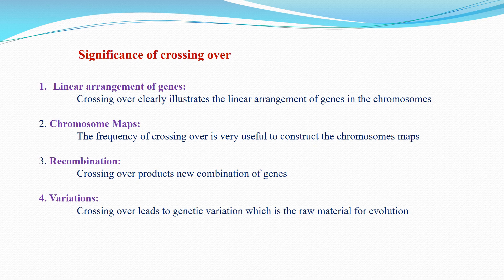These are the significant characters of crossing over. They are: linear arrangement of genes, chromosome maps, recombinations, and variations. Linear arrangement of genes means crossing over clearly illustrates the linear arrangement of genes in chromosomes. Chromosome maps means the frequency of crossing over is very useful to construct chromosome maps. Recombinations means crossing over makes new combinations of genes. Variations means crossing over leads to genetic variation, which is the raw material for evolution.